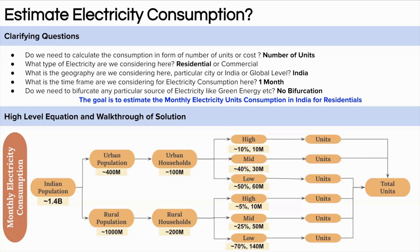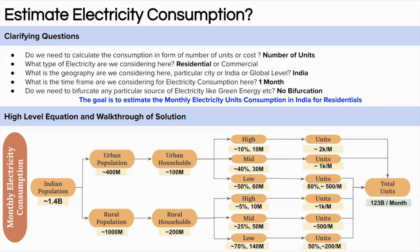A high-income urban household consumes around 2,000 units per month, mid-income urban around 1,000 units, and 80% of low-income urban households have electricity access consuming around 500 units per month. For rural areas, high-income households consume around 1,000 units, mid-income around 500 units, and only 50% of low-income rural households have electricity access, consuming around 200 units per month. Adding all of these up, we get around 123 billion units of electricity consumed in one month.